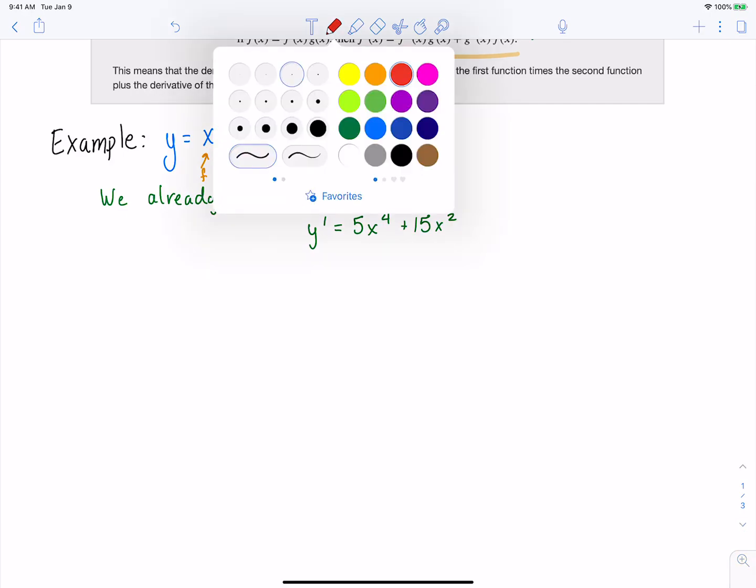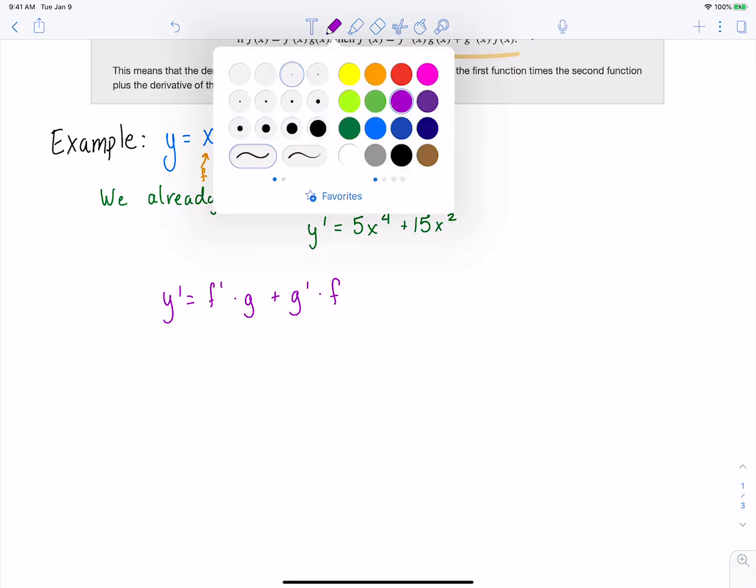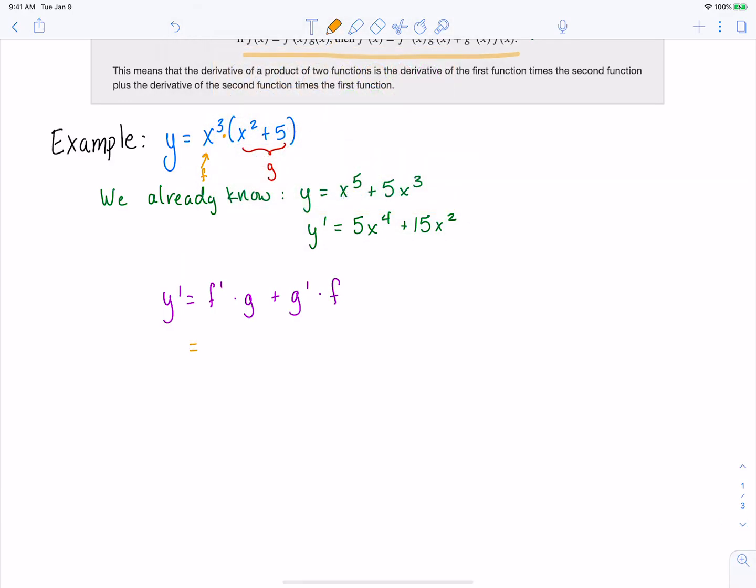So our derivative here, if we use the product rule, it's the derivative of f times g plus the derivative of g times f. The derivative of f is 3x². And then times g. I'll try to use the same colors as I have up above. So g is just our function x² + 5.